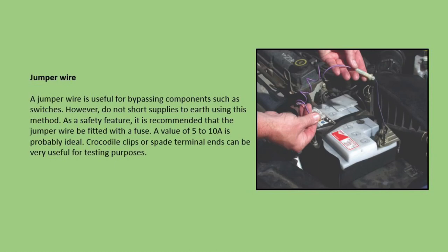Jumper wire. A jumper wire is useful for bypassing components such as switches — for example, a brake light switch. If your brake light switch has broken, you can use a jumper wire to test if it is definitely the brake light switch that has failed. However, do not short supplies to earth using this method. As a safety feature, it is recommended that a jumper wire is fitted with a fuse — a value of 5–10 amps is probably ideal.